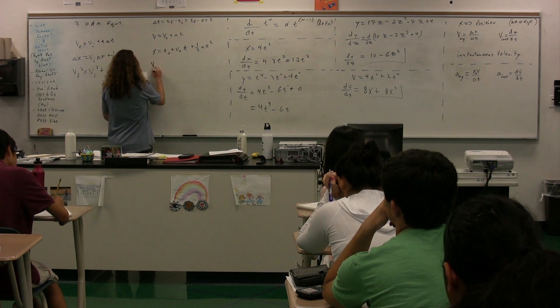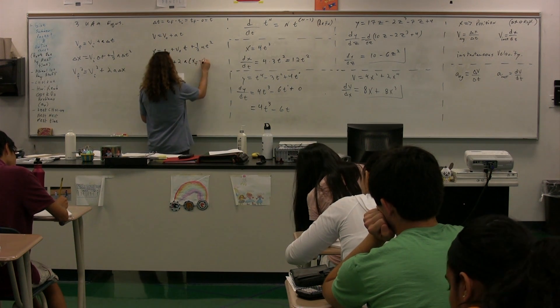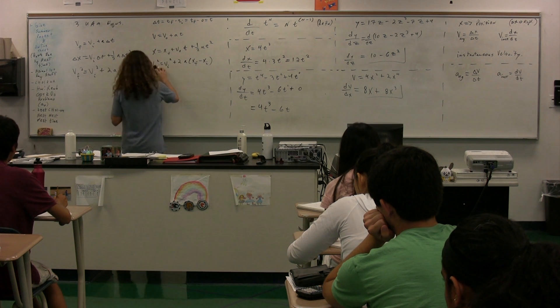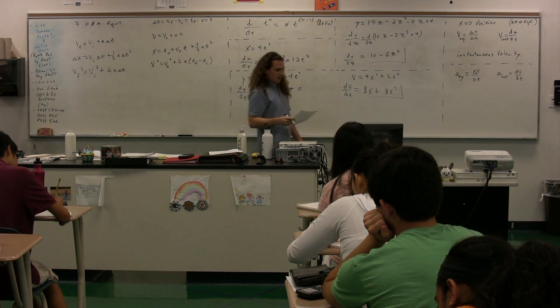We have velocity final squared equals velocity initial squared plus 2a times position final minus position initial. And you can see, actually, I'm sorry. They have velocity squared and v-naught squared.